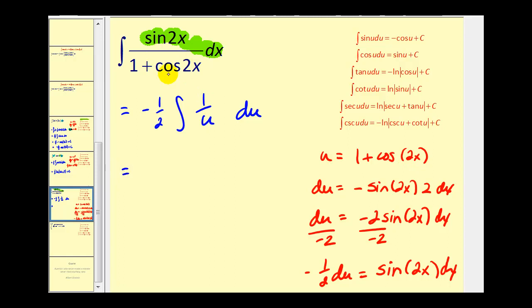And even though it did contain trig functions, we actually did not end up using any of the basic trig integral formulas. We ended up using the log formula. This ends up being negative one half times the natural log absolute value of u, where u is one plus cosine two x.